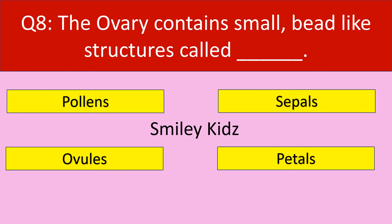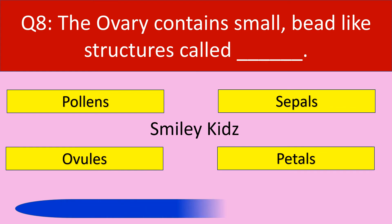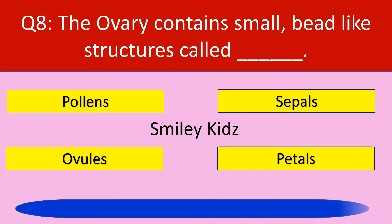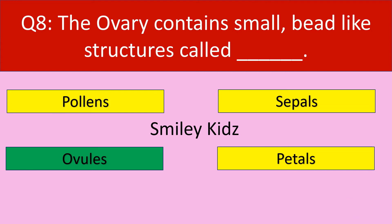Question number 8. The ovary contains small bead-like structures called. Options are: pollens, sepals, ovules, petals. Your time starts now. Your time is up. The correct answer is ovules. The ovary contains small bead-like structures called ovules.